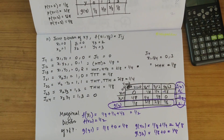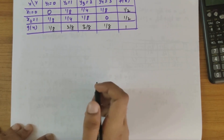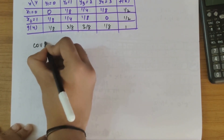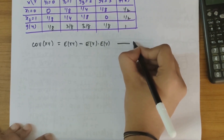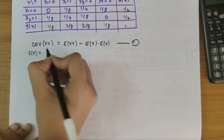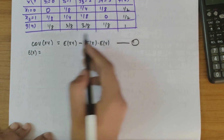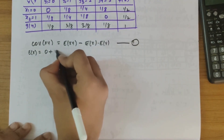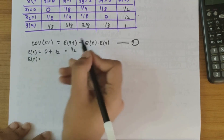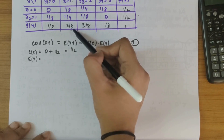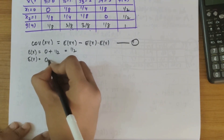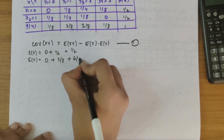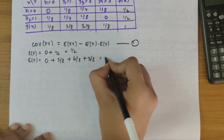Now let's calculate covariance and correlation. Cov(X,Y) equals E(XY) minus E(X)·E(Y). First, E(X) equals 0·(1/2) + 1·(1/2) equals 1/2. Next, E(Y) equals 0·(1/8) + 1·(3/8) + 2·(3/8) + 3·(1/8) equals 0 + 3/8 + 6/8 + 3/8 equals 3/2.